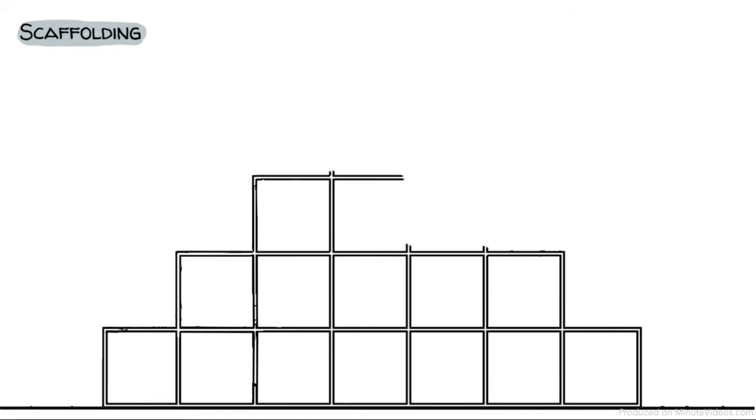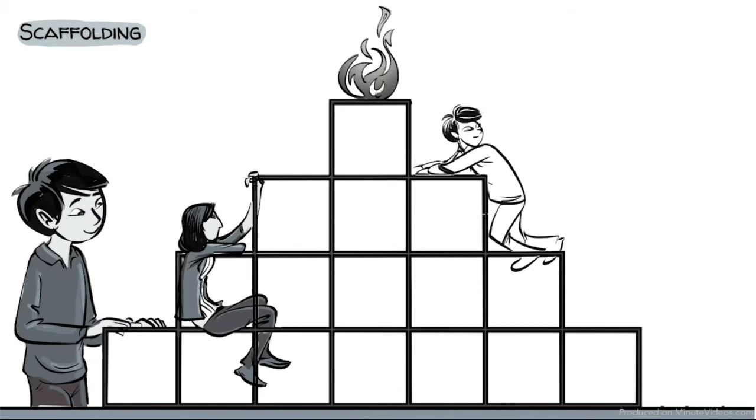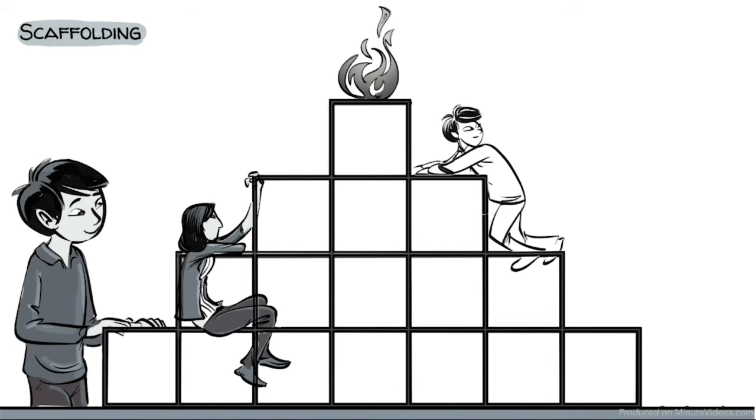Teachers also use scaffolding, a term coined by Brunner. Teachers do this by structuring activities based on students' existing knowledge and in a way that helps them reach the desired learning outcome. The teacher first demonstrates the process as the student watches, then lets the student have a go, steps back, and offers support and feedback when needed.